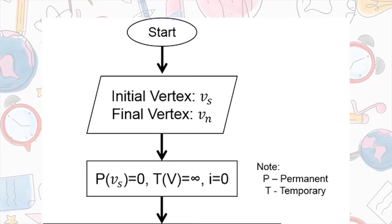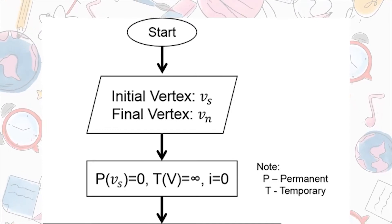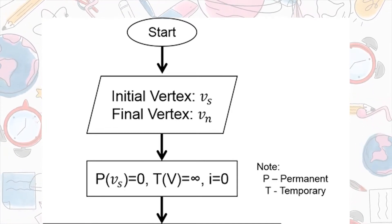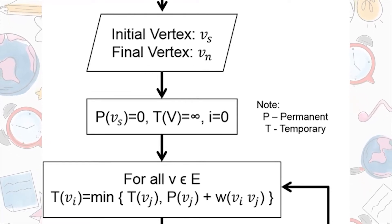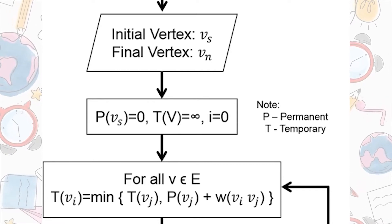First, we will identify our initial vertex, which is represented as V sub S, and the final vertex, which is the V sub N. Second, we will permanently label the initial vertex as 0, the temporary vertex as infinity, and I will be 0.